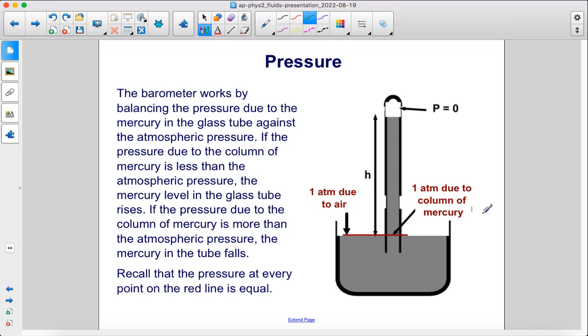The barometer works by balancing the pressure due to the mercury in the glass tube against the atmospheric pressure. If the pressure due to the column of mercury is less than the atmospheric pressure, the mercury level in the glass tube rises. If the pressure due to the column of mercury is more than the atmospheric pressure, the mercury in the tube falls. Recall that the pressure at every point on this red line, this horizontal line, is equal. So if you have a point here and a point here, the pressure is the same at both of those points. The pressure here is due to one atmosphere of air. The pressure here is due to the weight of this fluid.